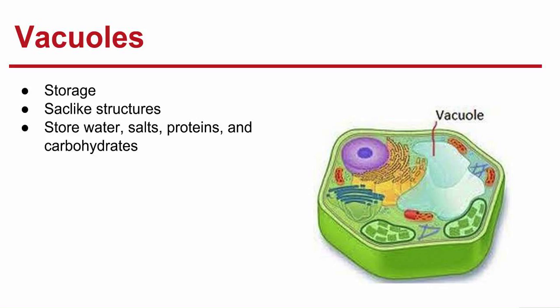Next we have vacuoles — the storage of the factory. They're sac-like structures that store materials such as water, salts, proteins, and carbohydrates. In the plant cell, there's a large central vacuole filled with liquid, which we can see here. They're also found in unicellular organisms and some animals, and they're important for homeostasis of the cell. Homeostasis is a general balance within the cell — vacuoles can pump water in and out of the cell depending on what the cell needs.